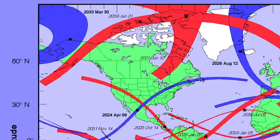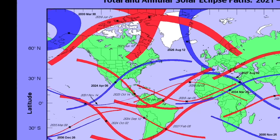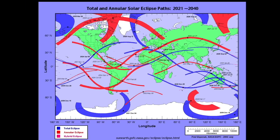Back over to North America: in 2033, that's the one in western Alaska, and again the one on April 8th, 2024 is coming up really soon. There are a bunch happening between 2021 and 2040, and all those previous maps were created by Fred Espenak for Goddard Space Flight Center. He's done amazing work over the years and is a real eclipse chaser.